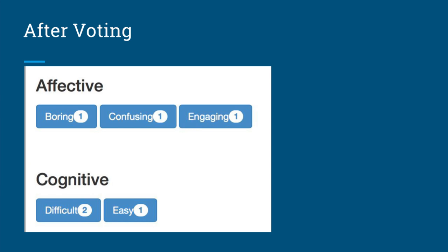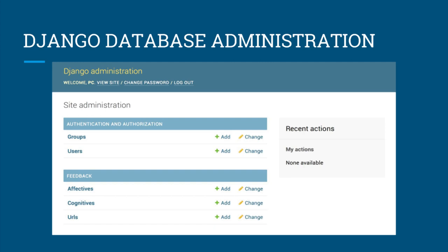The results also show that two other users had voted the content as confusing and engaging, and similarly for cognitive. This gives the educator an idea of the different votes the content received, and from there they can make necessary changes to improve it. Next we are going to talk about what goes on in the backend of the Django database, and my teammate Prabhjit is going to take over.